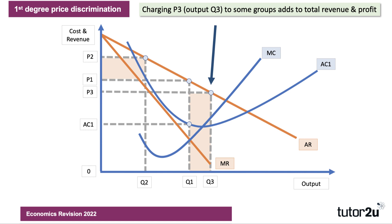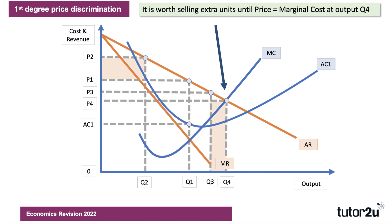Likewise, you could go below P1 — there might be some consumers willing to pay P3. You can charge them P3 if you can find and negotiate with them, and still make a profit because price is still greater than marginal cost. It's worth going ahead with that transaction. You could go all the way down to P4, where the price people are willing to pay equals the marginal cost of supply — breaking even on that transaction but still earning some extra revenue. With perfect price discrimination, you sell quantity Q4 at a whole range of prices from P2 all the way down to P4.